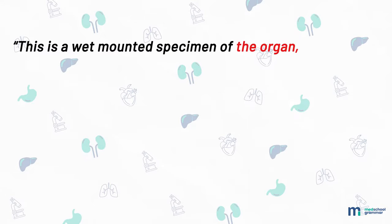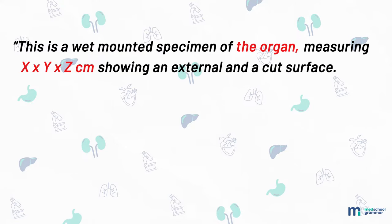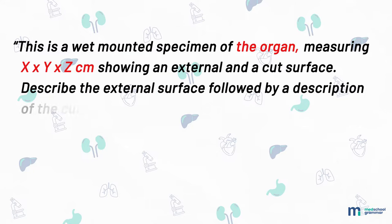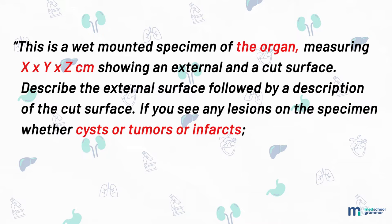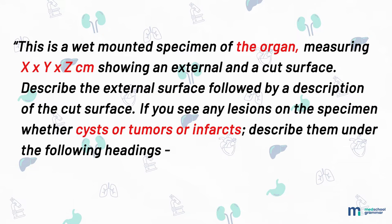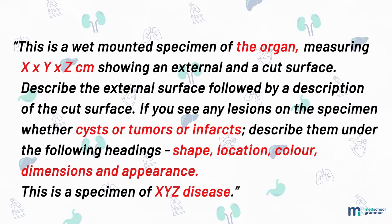You begin with the words: 'This is a wet mounted specimen of the organ measuring XYZ centimeter, showing an external and a cut surface.' You then go on to describe the external surface followed by a description of the cut surface. If you see any lesions on the specimen — whether cysts, tumors, or infarcts — describe them under the following headings: shape, location, color, dimensions, and appearance. You then end with your diagnosis saying 'This is a specimen of XYZ disease.'